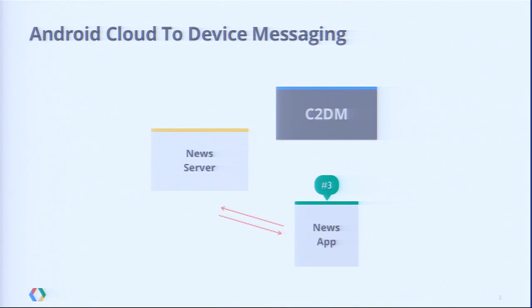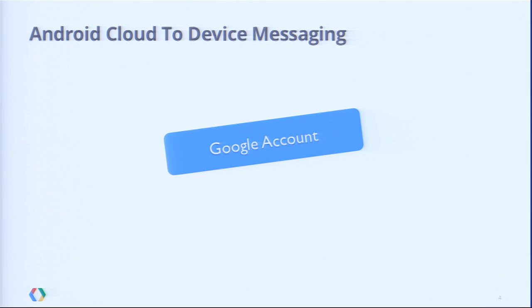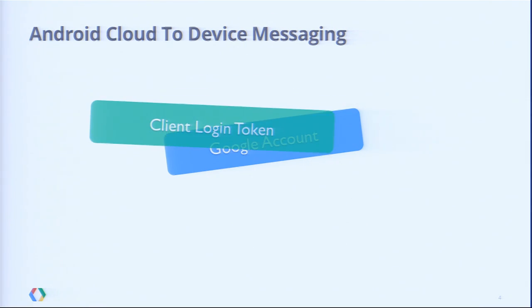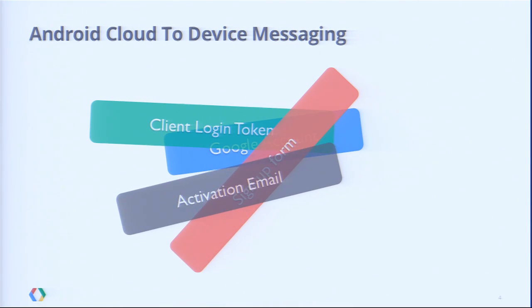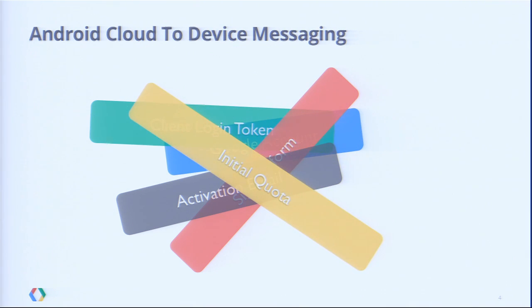Send to sync is a simple and flexible mechanism. However, much can be done to optimize for all the use cases out there. Let's see how today we get started with C2DM. We need a Google account to create and manage a client login token. We compile a sign-up form and wait for an activation email confirmation. We're granted some initial quota. The more we develop the application, the more users we get, the more messages we send, the more quota we need — and so on and so forth.